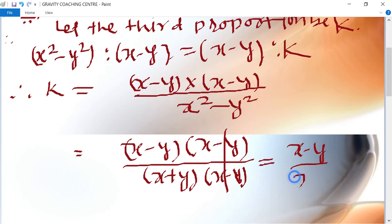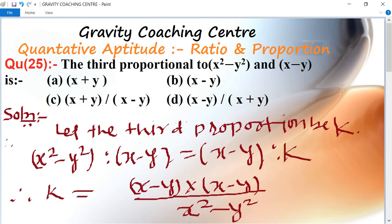This equals (x - y) : (x + y), which is the answer. Option D is the right answer.